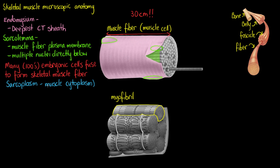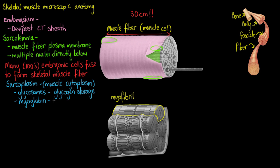The cytoplasm is a thick soup-like solution that all intracellular contents float around in. We give it a special name in skeletal muscle because it carries an abundance of a few specific things. The first is glycosomes — small membrane-enclosed organelles containing lots of glycogen and glycolytic enzymes, ready to convert that glycogen into glucose when muscles need energy. The next component found in abundance is myoglobin, an oxygen-binding protein similar to hemoglobin in red blood cells. Just as oxygenated heme gives red blood cells their red colour, oxygenated heme within myoglobin gives muscles their red appearance.